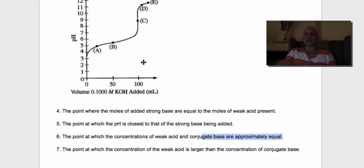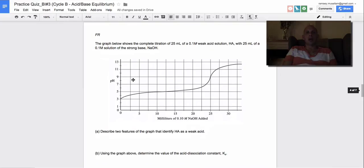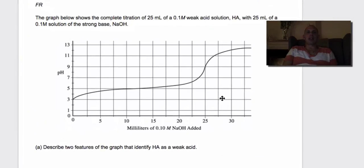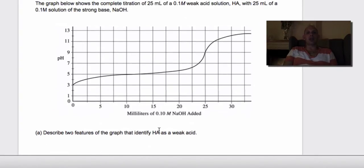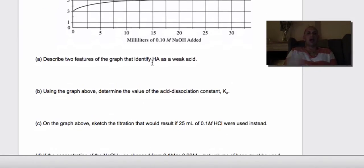And there is the buffer zone. We can tell that the pKa is probably around 5.5 there. The point at which the concentration of the weak acid is larger - so that's an acidotic situation, that's A. Let's look at this curve. It says we have the titration of 25 mils of a weak acid with 25 mils of 0.1 molar NaOH. So two features that tell us that HA is a weak acid: well, one, the equivalence point here is greater than seven. And two, after a slight increase and starting at a fairly high acidic pH, it buffers out here. So we have the presence of a buffer zone and we have the presence of an equivalence point greater than seven. Determine the acid dissociation constant Ka.